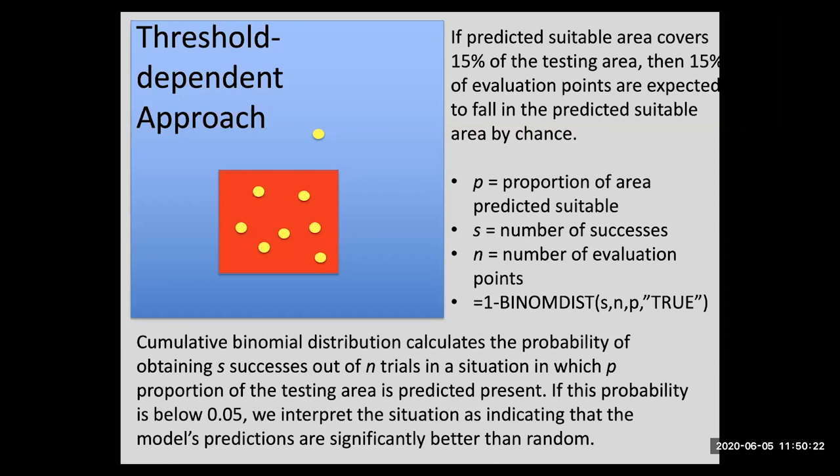If that probability is below 0.05, then we interpret the situation as indicating that the model's predictions are significantly better than random. And so in this example, maybe the red square covers 15% of the blue square. And we have eight evaluation points, and seven of those were successfully predicted by our model. And you can plug in 0.15, seven, and eight, and get an answer in Excel or in any number of programs very quickly.